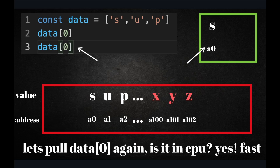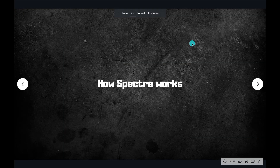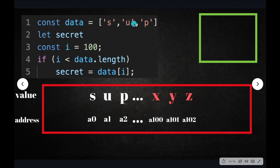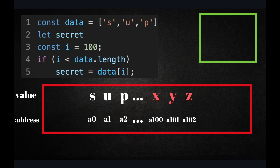Now let's exploit this with Spectre. The security researchers said: let's write a piece of software and utilize a CPU feature called speculative execution, or branch prediction. We have the array "SUP". I'm going to declare a variable called secret and set it to integer 100. Now if I is less than data.length — we know data.length is 3, and 100 is definitely not less than 3 — we know this branch will never be executed.